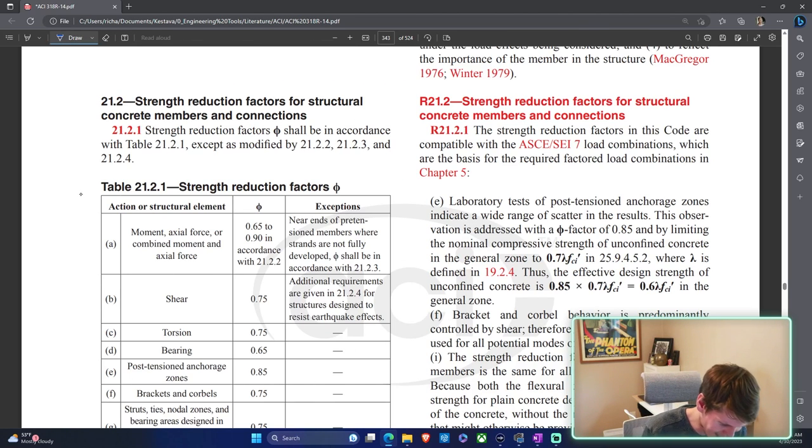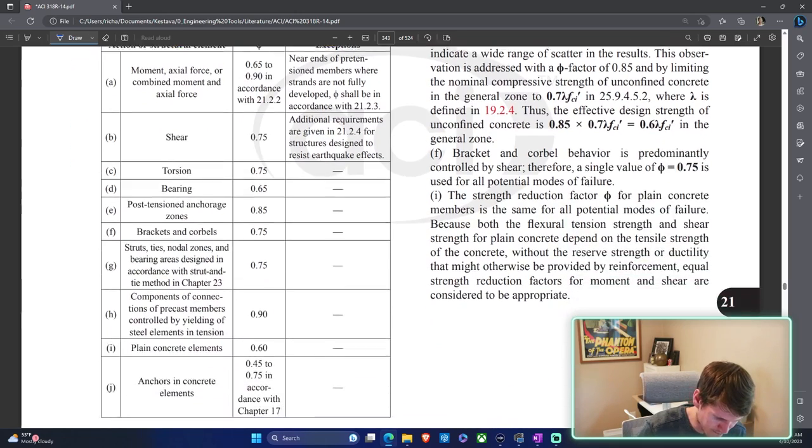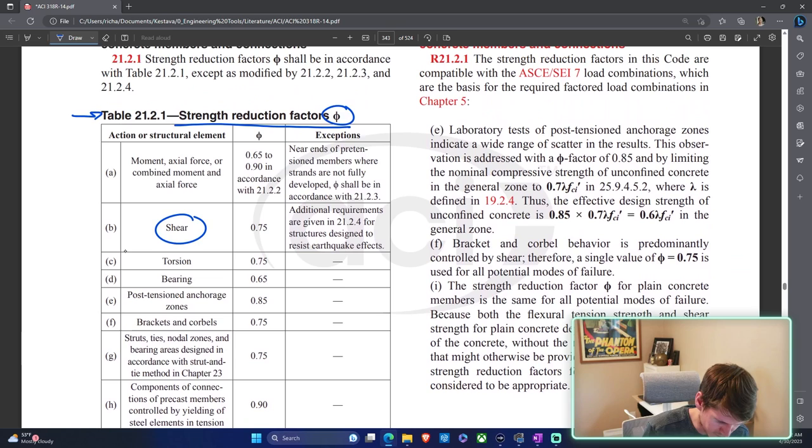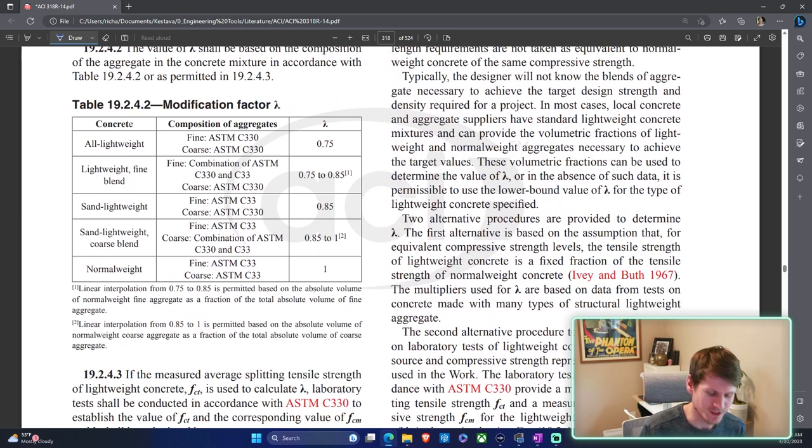We're moving through the ACI today. Here we are, table 21.2.1, this is all your strength reduction factors phi. It's got everything for every situation you could possibly have. We are just standard shear, 0.75. Gives you a little exceptions over here, make sure you read into those when you're talking about earthquakes. Let's go check out lambda. Just like that, we find ourselves table 19.2.4.2, modification factor lambda. If we scroll down here, we will see normal weight concrete is just one.